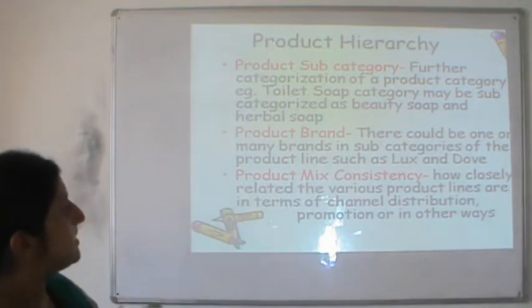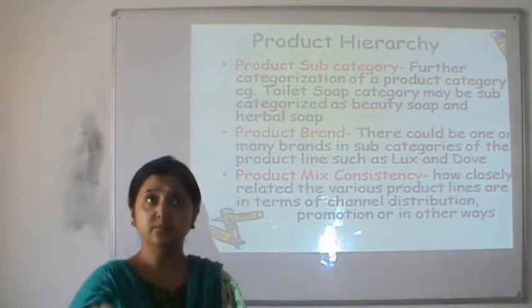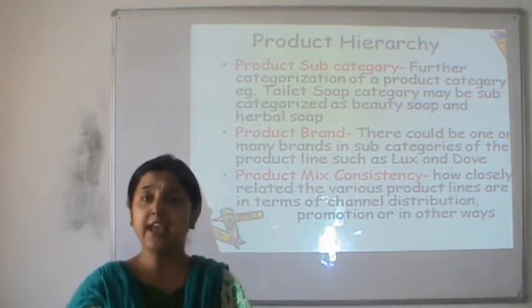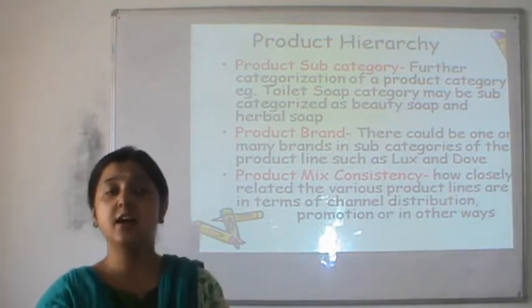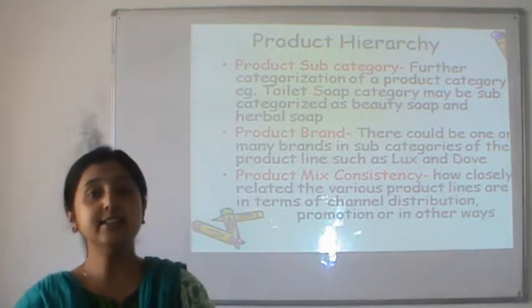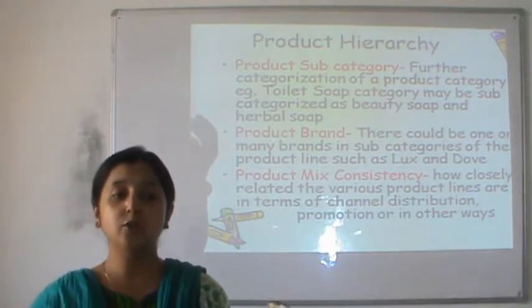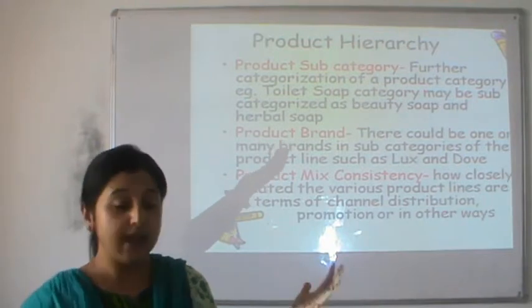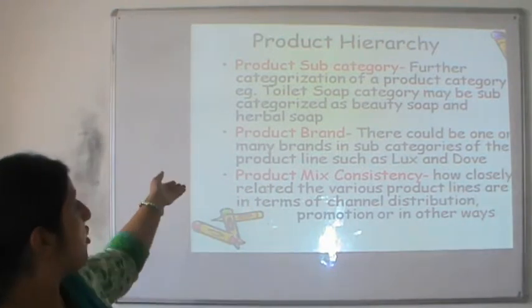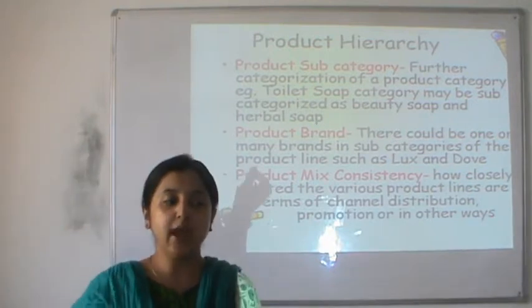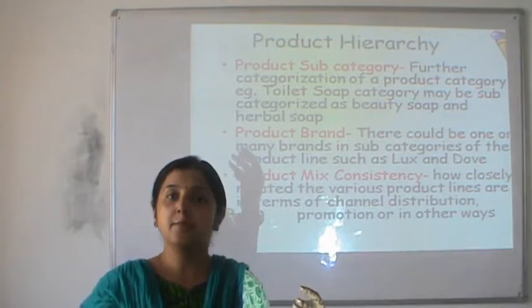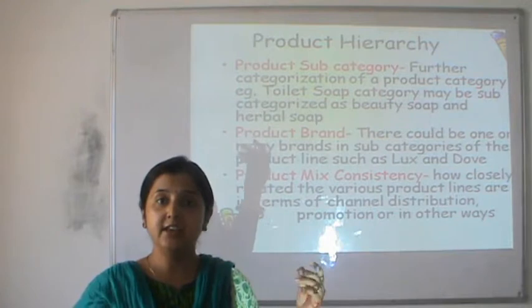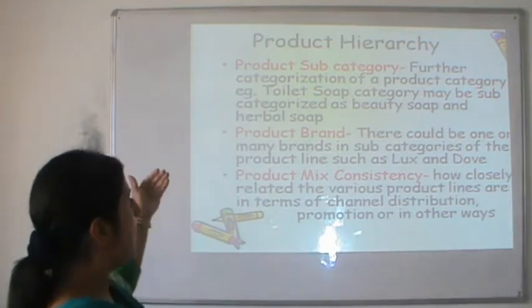Within each sub-category they have product sub-sub-categories. In body wash, for example, they have soaps, bars, and gels. In each sub-category they have product brands. If you are talking about the soap sub-category, Unilever has Dove, Pears, Lux, Lifebuoy, Hamam, Neem, Breeze, Jai, and many more — these are all product brands.